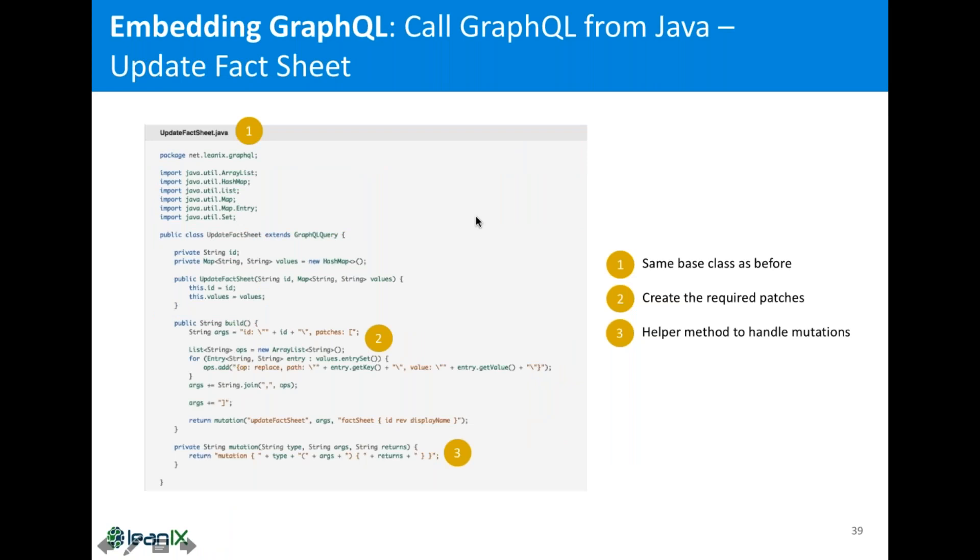Update is working the same way. You have the same base class, and just one example, what you can do, you can have a build method, which will take your patches. So, you have patches as a map, put it in an array, so you see that they here are replaced patches, you're just constructing, and again, you're calling update fact sheet, and you're hiding the complexity from the caller. So, within just a couple of lines, you have a fully valid example that is retrieve fact sheet by ID, and update the fact sheet with some parameter, and you can build your own libraries based on this.